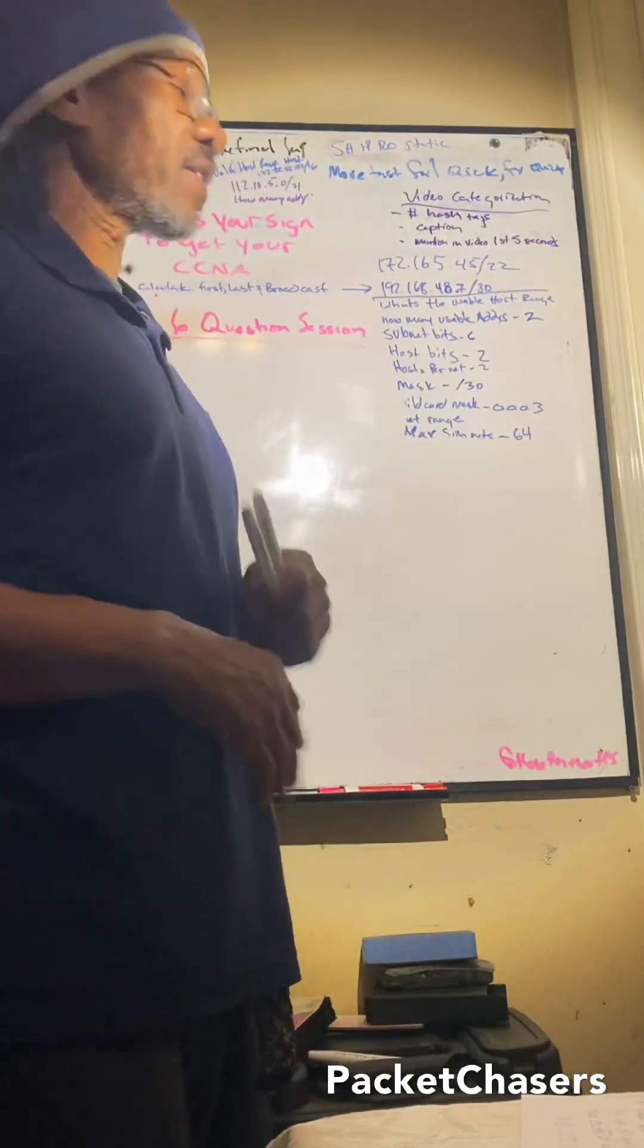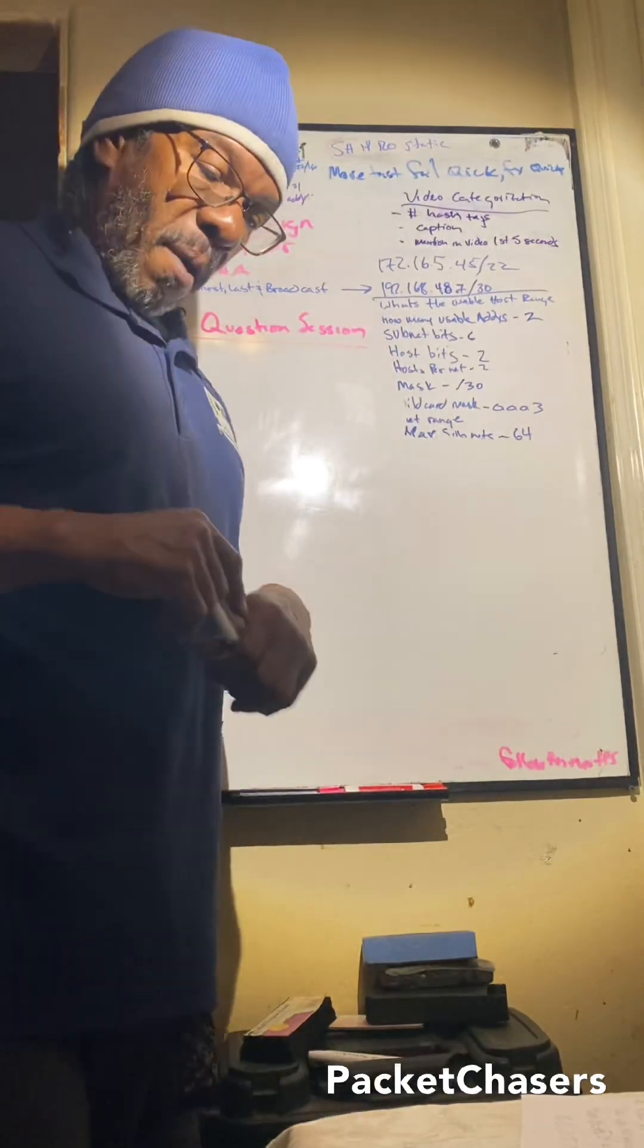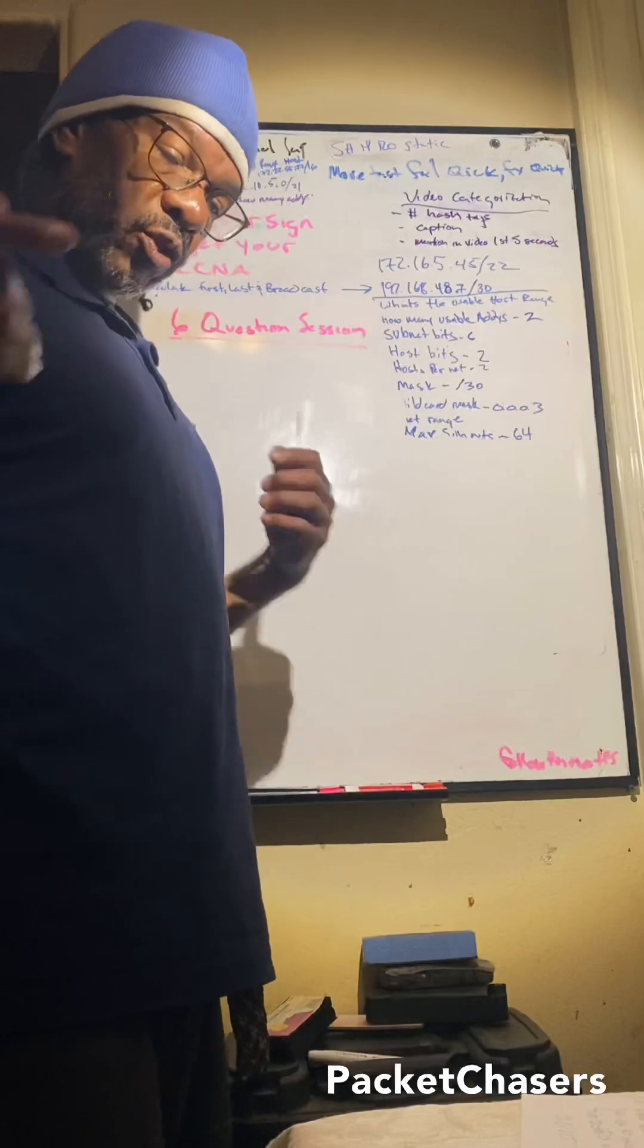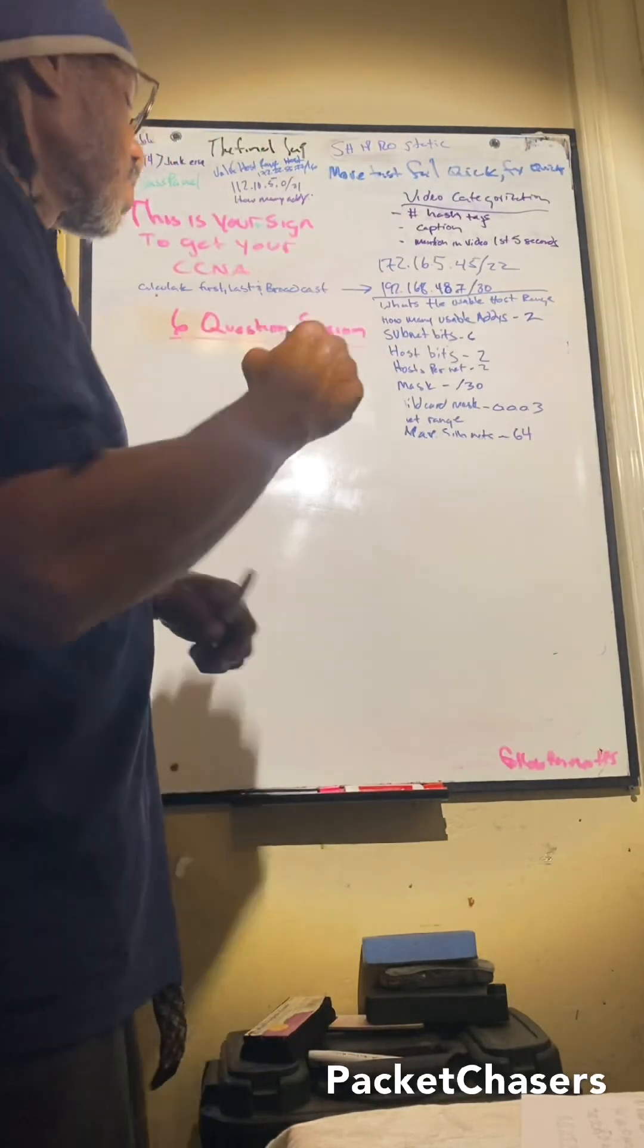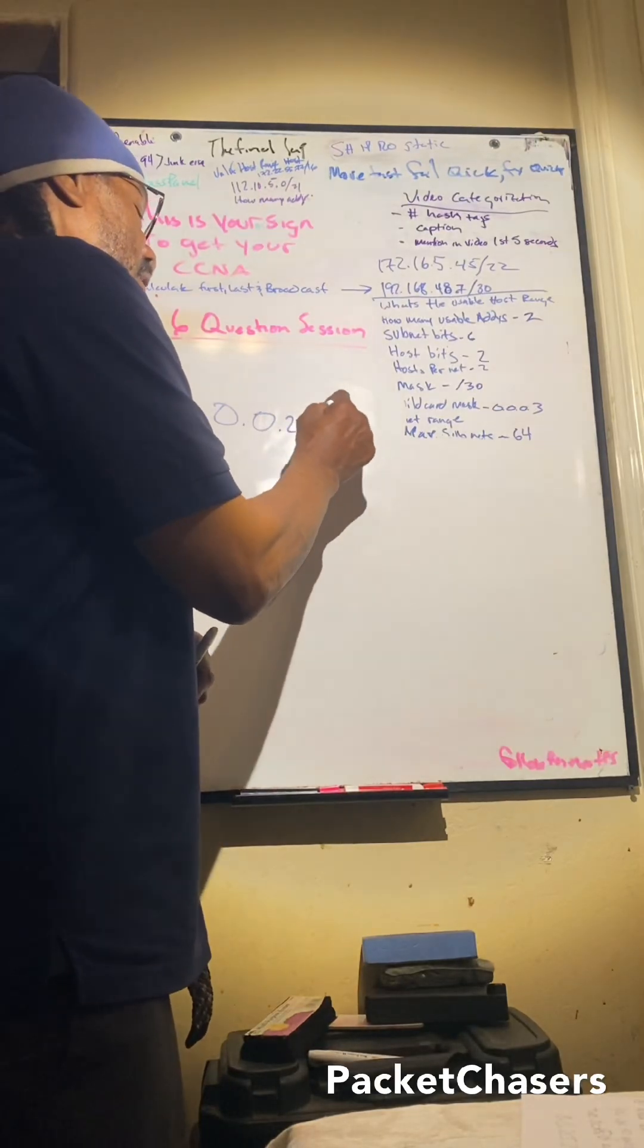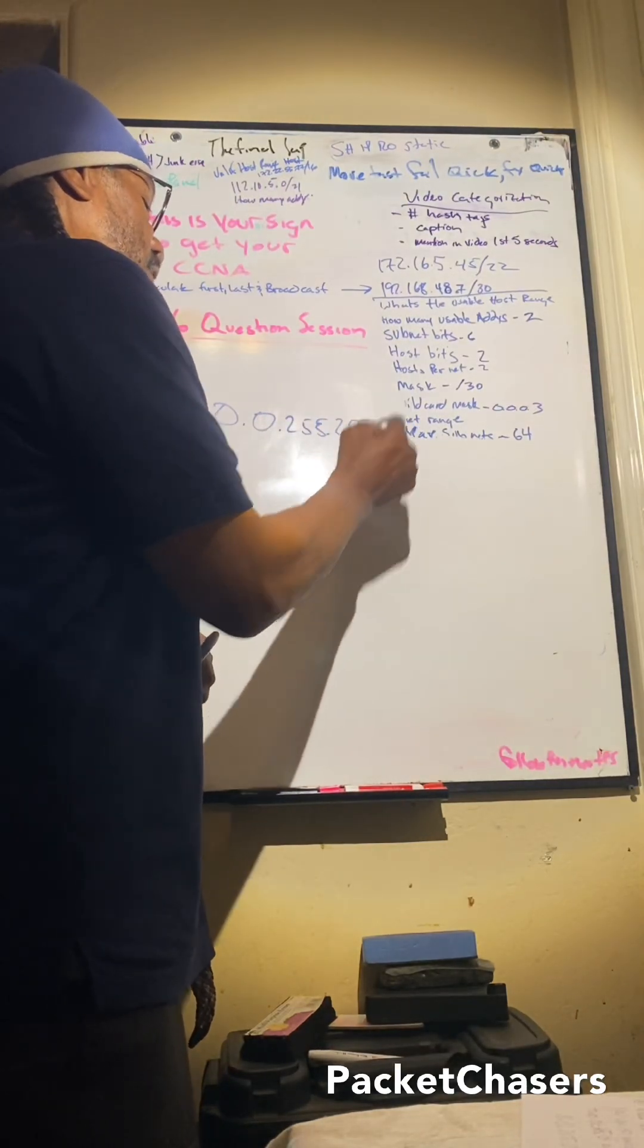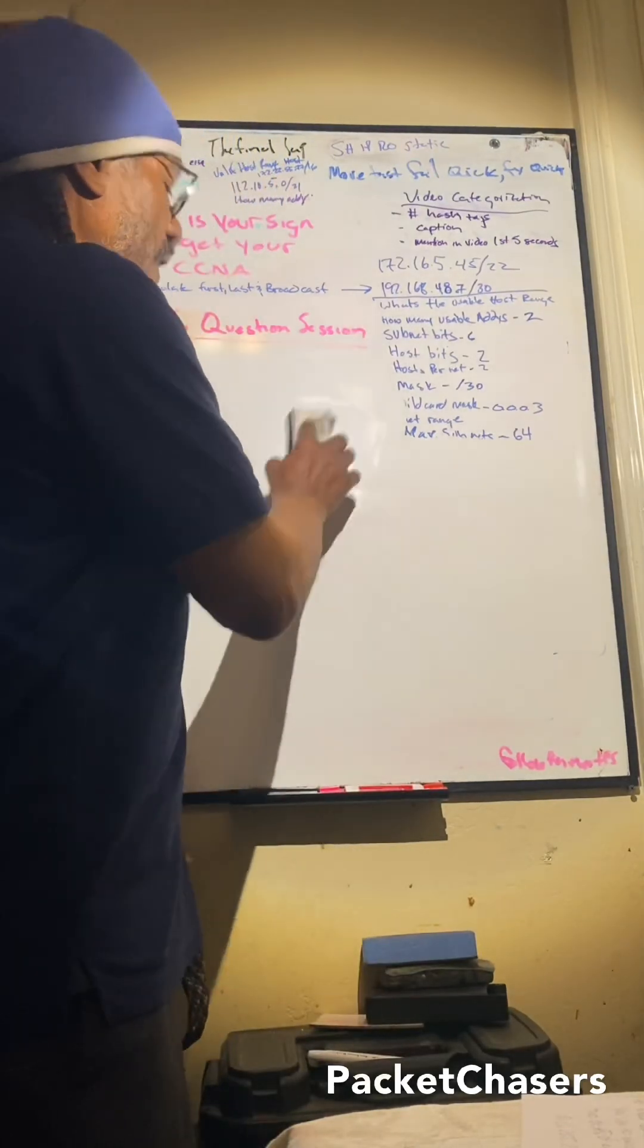the first two octets of any IP address family? What wildcard mask would you use to match the first two octets of any IP address? 0.0.255.255. Appreciate you all for pulling up today.